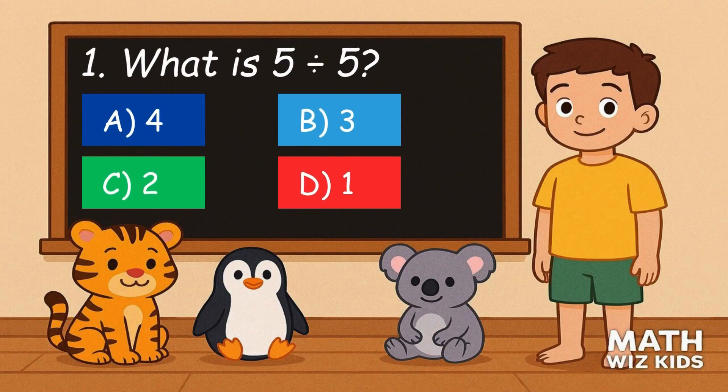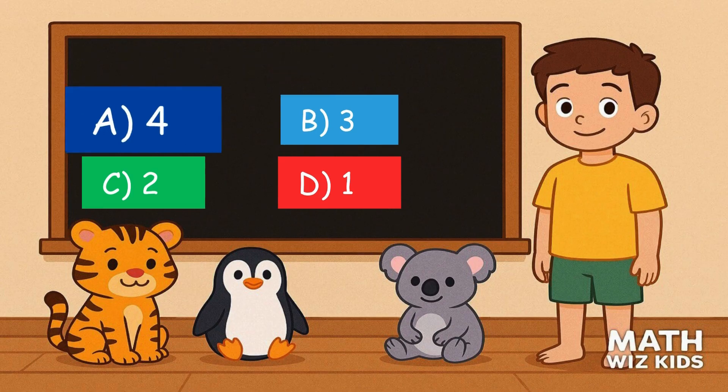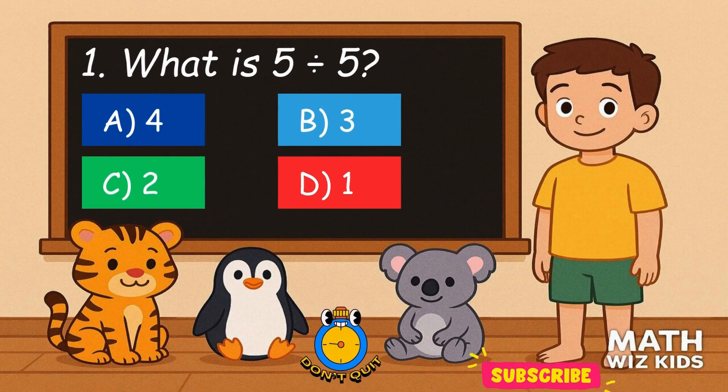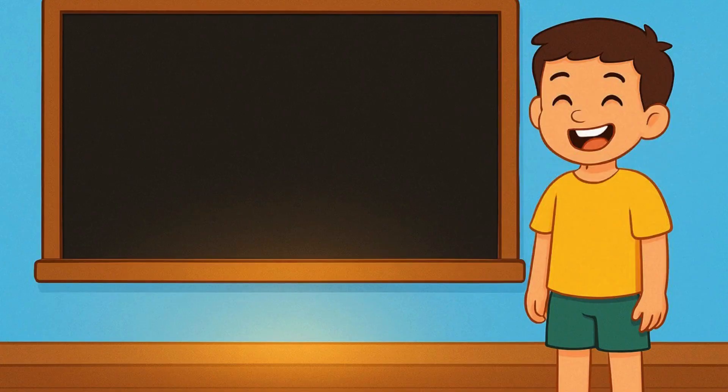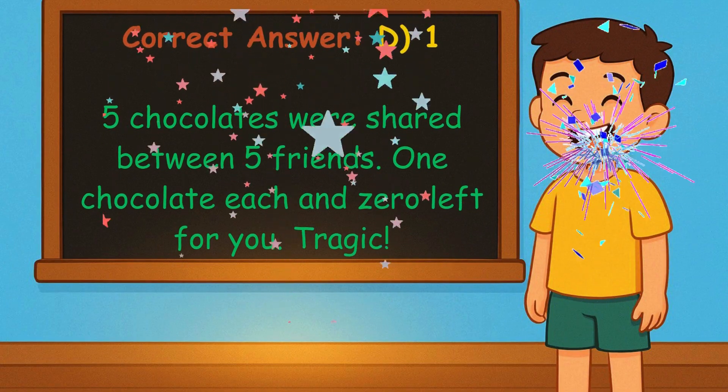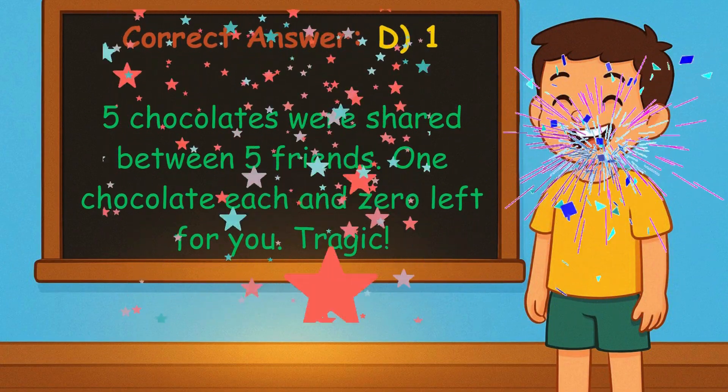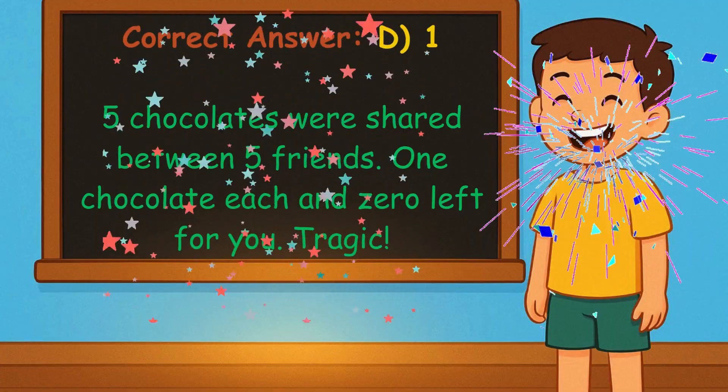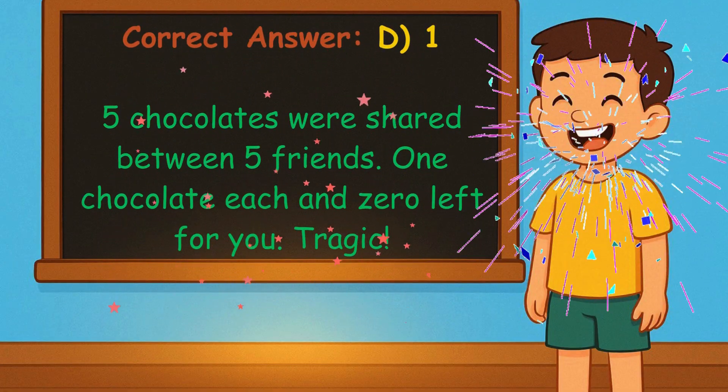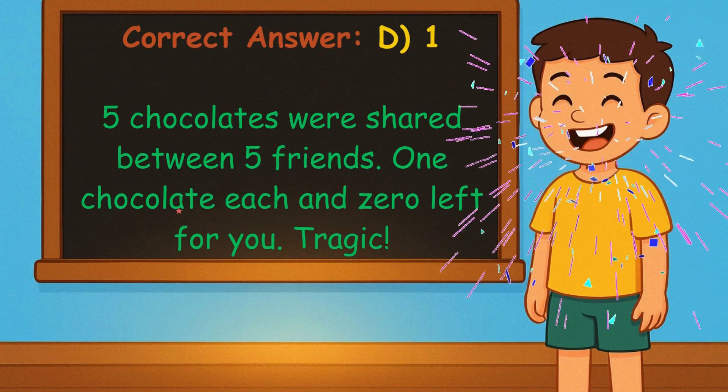1. What is 5 divided by 5? Is it A, 4, B, 3, C, 2, or D, 1? Correct answer is 1. You had 5 chocolates and 5 friends. 1 chocolate each and 0 left for you. Tragic!